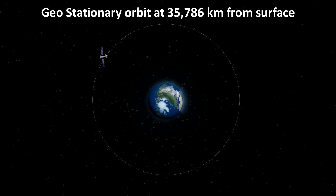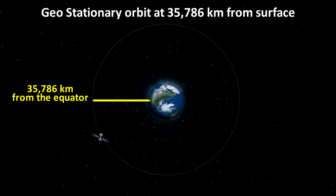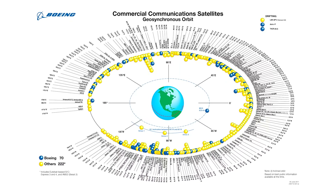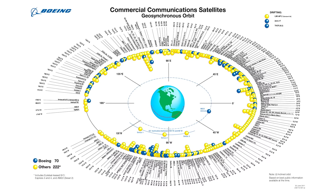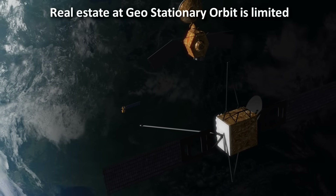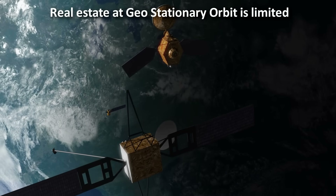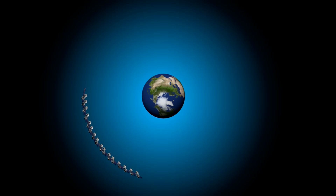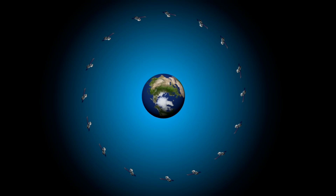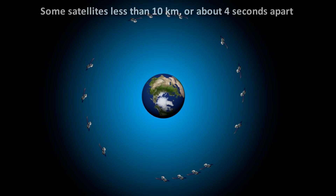There is only one geostationary orbit, at 35,786 kilometers above the earth's equator, and there are already about 500 satellites at that altitude. The total perimeter available is about 265,000 kilometers. If the 500 satellites were equally spaced, there would be 500 kilometers between them — but that's not how it works. There are many more satellites above the most developed regions of the earth, sometimes less than 10 kilometers apart, and at their required speed of 11,000 km/h (3 km/s), they are less than 4 seconds apart.